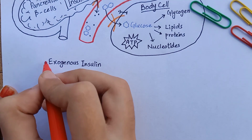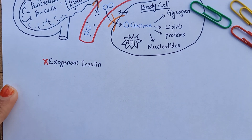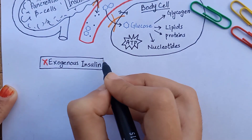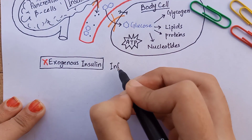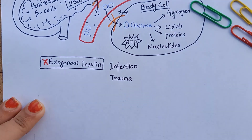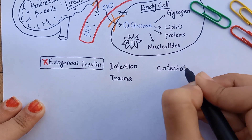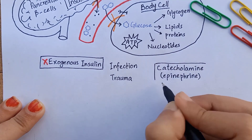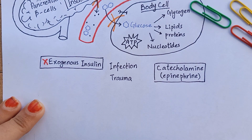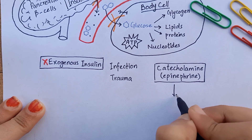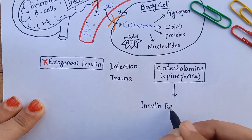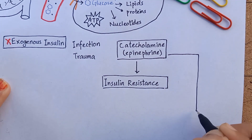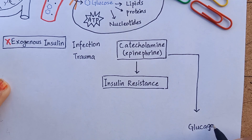Failure to take insulin is the most common precipitating factor that leads to diabetic ketoacidosis. Although there are other factors such as infection, trauma, and stressors that are associated with the release of counter-regulatory hormone catecholamines — epinephrine — which block any residual insulin action and stimulate the secretion of glucagon, which is an insulin antagonist.